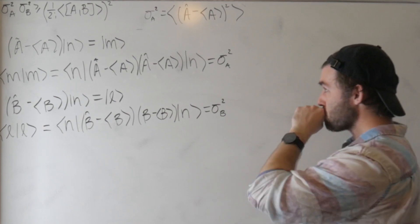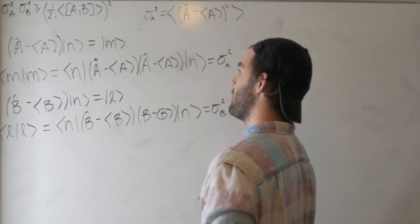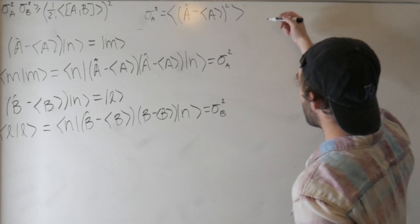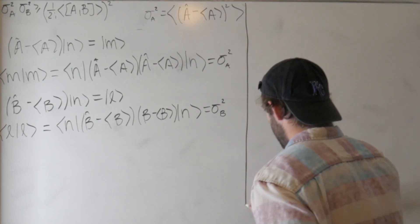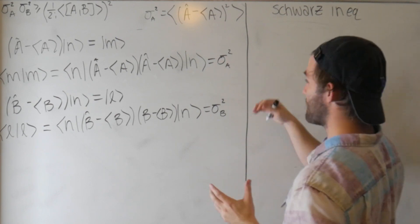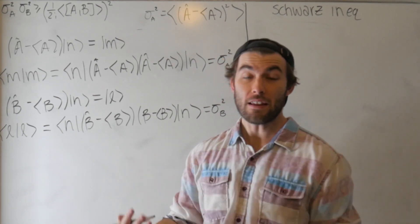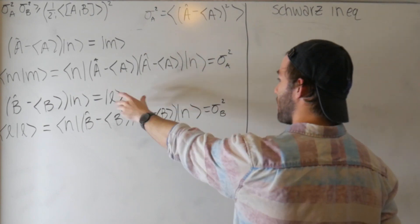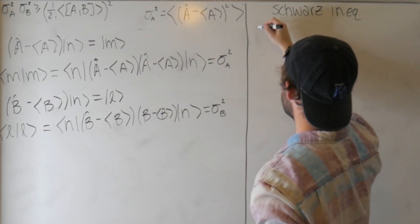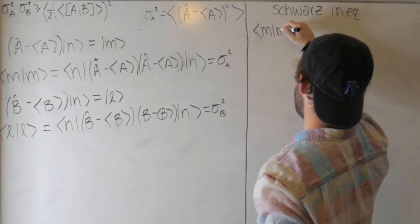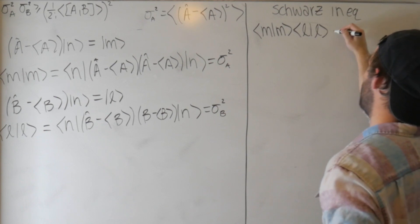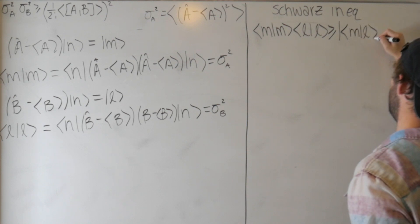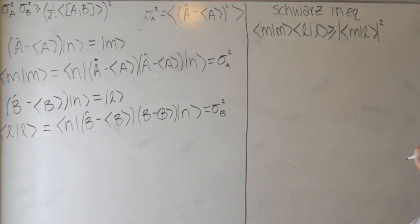The uncertainty relation has a greater-than-or-equal-to sign — the inequality comes from the Schwartz inequality. The Schwartz inequality tells us that for vectors, taking the inner product obeys: ⟨m|m⟩ · ⟨l|l⟩ is greater than or equal to the magnitude of ⟨m|l⟩ squared.